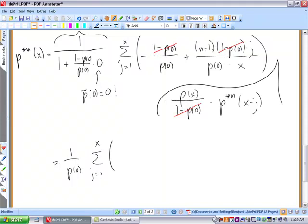so it will be n plus one times j over x, the p of zero is in front of the sum now, minus one.